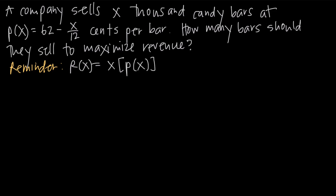In this video we're going to be doing an applied optimization problem where we've been told that a candy company sells x thousand candy bars at a price of P of x equals 62 minus x over 12 cents per bar. This function P of x models the price of each candy bar. The question asks us how many bars should they sell if they want to maximize their revenue.